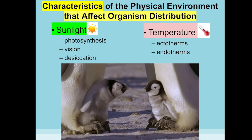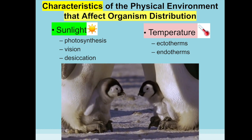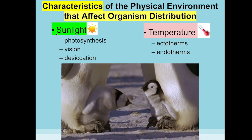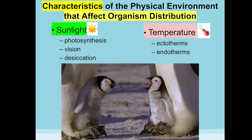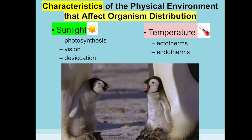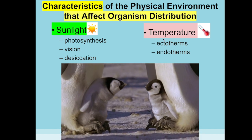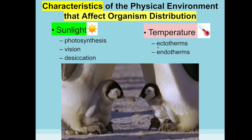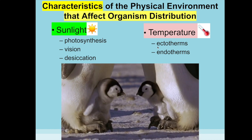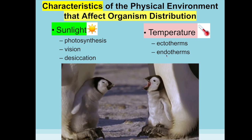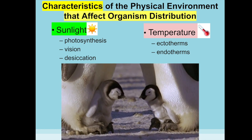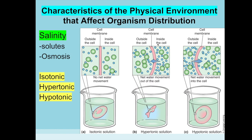There are many characteristics of the physical environment that affect where an organism can live. Sunlight determines whether there's enough light for photosynthesis, affects vision, and can cause desiccation. Temperature affects ectotherms that warm up from the sun — is it sunny enough, or too hot? — and endotherms that rely on body fat for warmth — do they have enough fat to stay warm, or too much and they overheat?